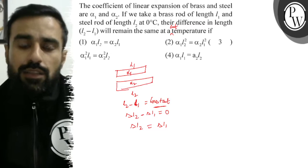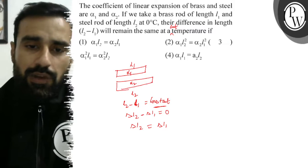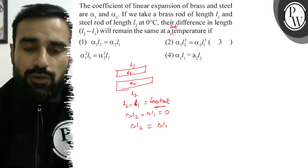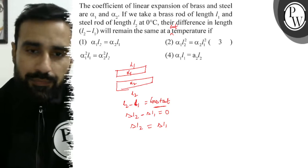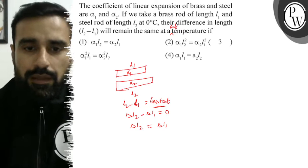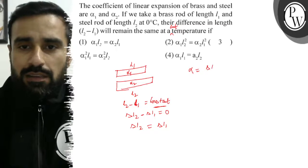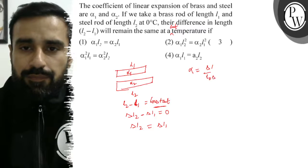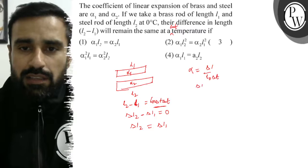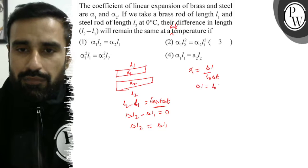The change in length formula is L alpha delta T. This is very simple. The coefficient of expansion is defined as the fractional change in length per unit change in temperature. That is, the change in length formula is L0 alpha delta T, where L0 is the initial length.